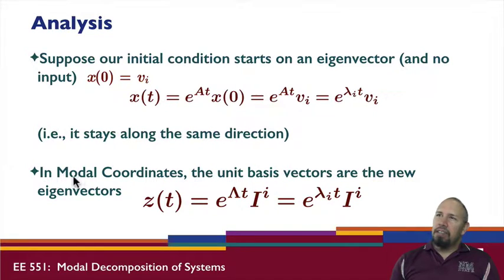Another thing that's significant is that in modal coordinates, we still have eigenvectors. The new eigenvectors are, in fact, the unit basis vectors - that is, columns of the identity matrix. We can show that this relationship is satisfied for any column of the identity matrix. That's simple. We know what the eigenvectors are, and they're simple.